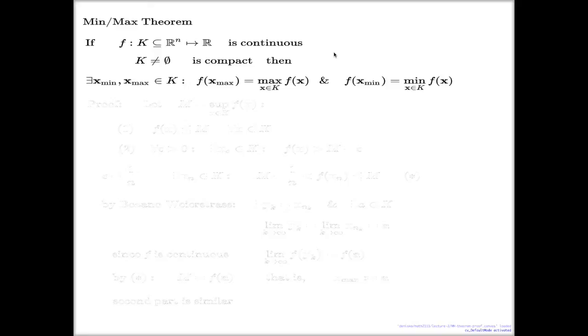So here's my min/max theorem. I have my function which is continuous and K is compact. Well, it must be non-empty, otherwise it doesn't make much sense to consider a function on an empty set. You can consider a function on an empty compact subset, but on that subset obviously the function doesn't attain max and min. So look what the proof says.